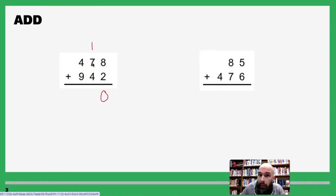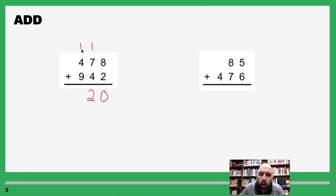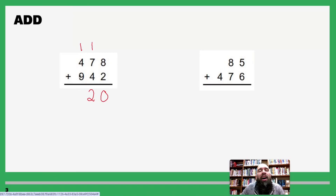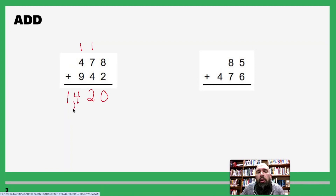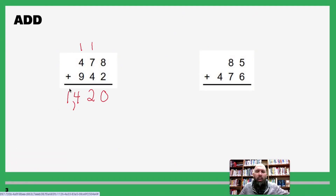Write down just the two and carry the one again. Then we do it again at the hundreds place value: one plus four is five, five plus nine is fourteen. So write down fourteen — put a comma there, that's our answer. Once we get to our last number we're adding, we don't have to worry about carrying over because we just put the number there.